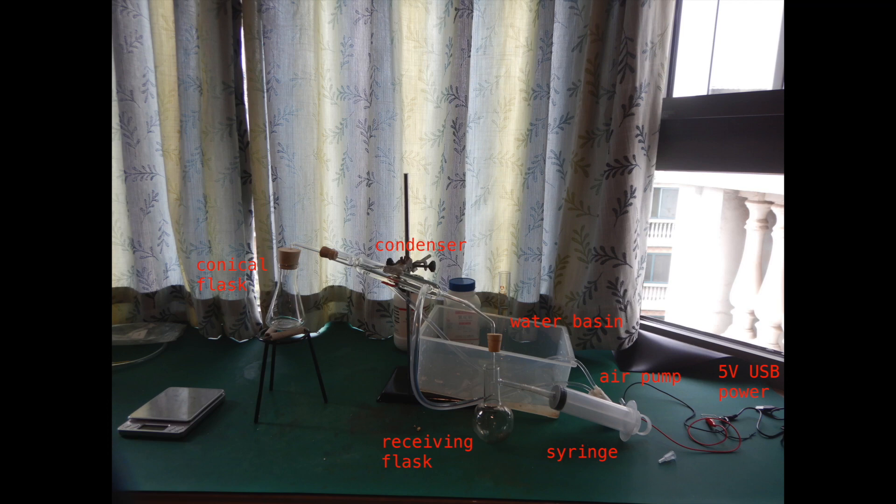First, we build our apparatus. Our apparatus consists of a 150 milliliters conical flask, a condenser, a receiving flask, an ice water bath, an air pump, a water basin, a power supply, several tubings, and a syringe.